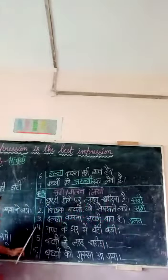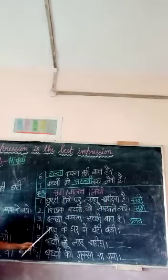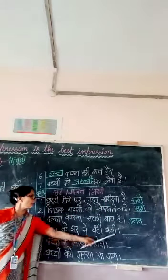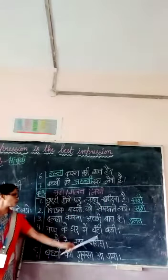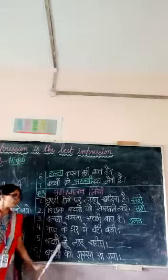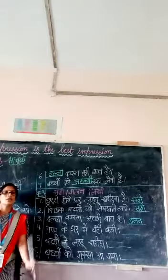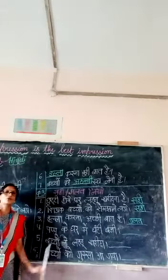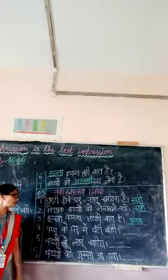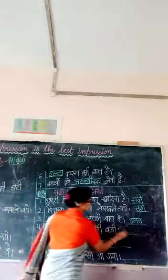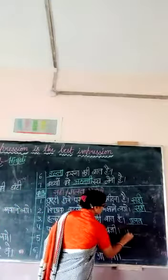Now next, continue. Fourth one. Pappo ke garh me ghandi baji. Jho ghandi baji ti hoon pappo ke garh me baji ti? No. Ho toh school me baji ti. So this sentence is also false, galab.